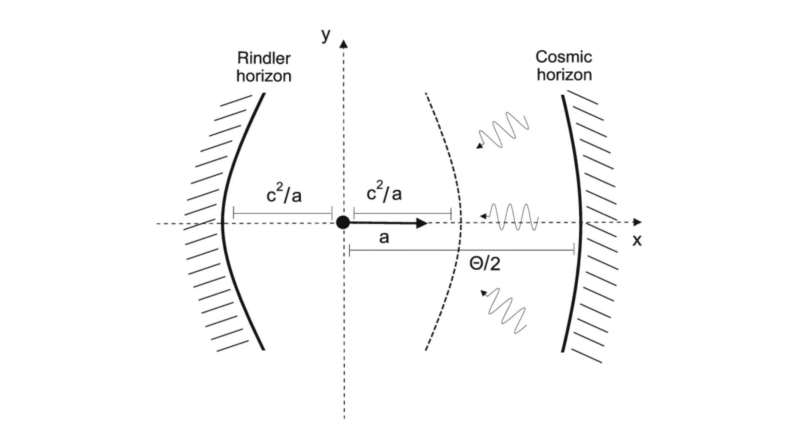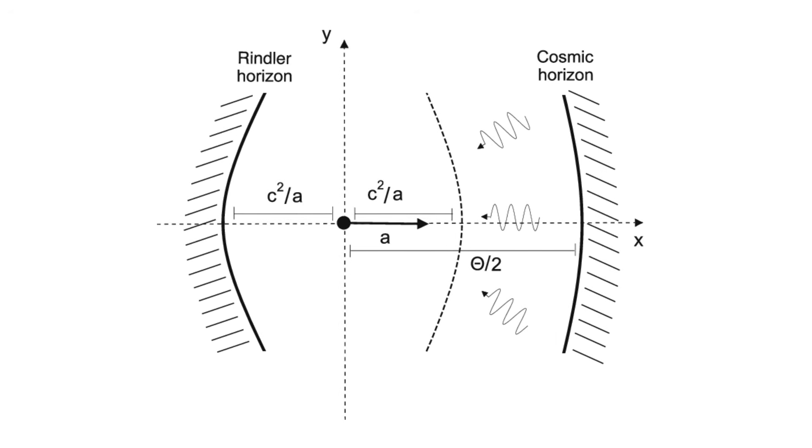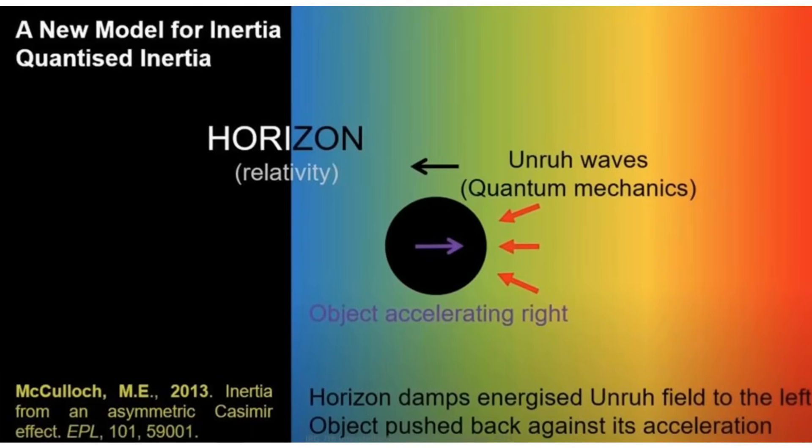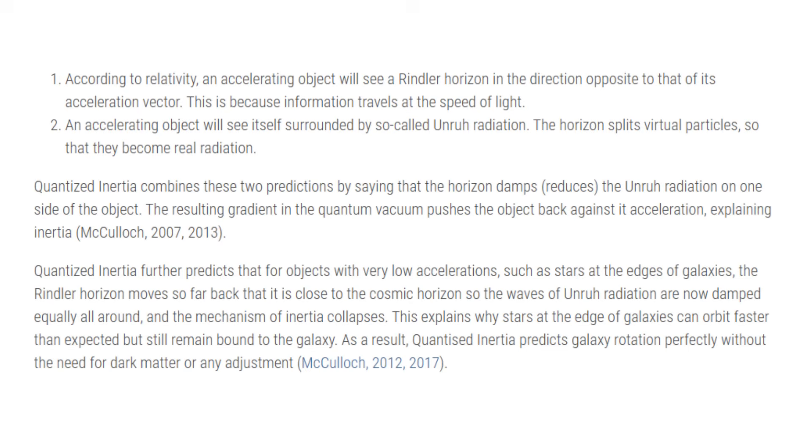The reason behind this choice is that McCulloch interprets this radius of the universe as a Rindler horizon, that appears for any accelerated body, and has a corresponding Unruh radiation. Then he argues that it is this radiation from the quantum vacuum, the one that modifies inertia in galaxy rotation curves.